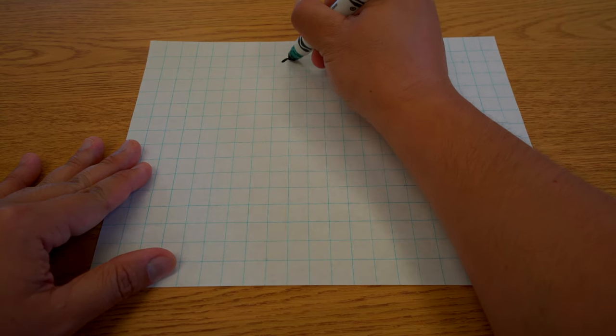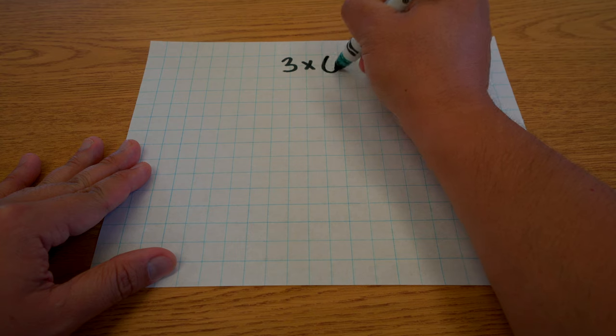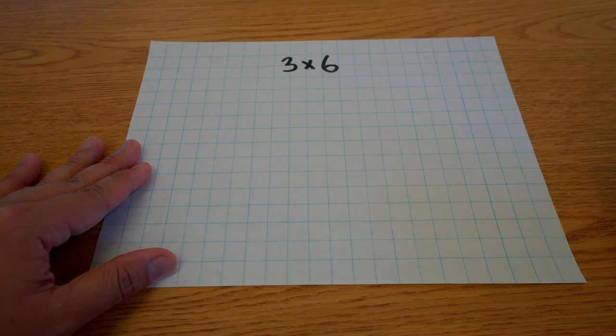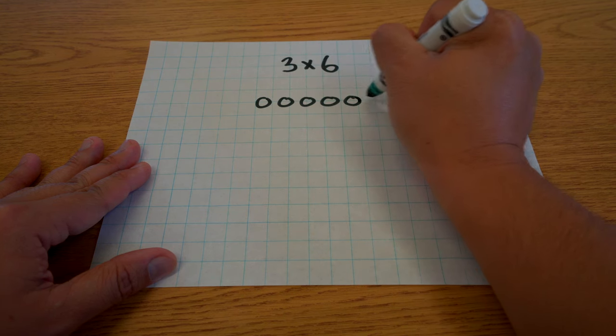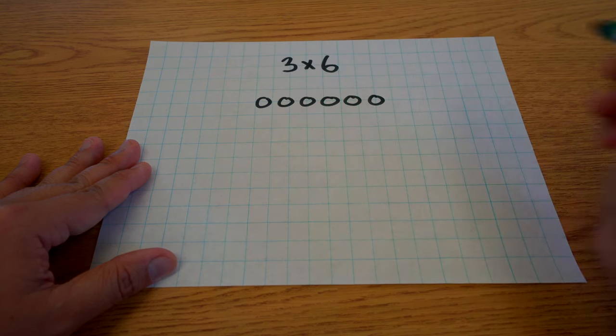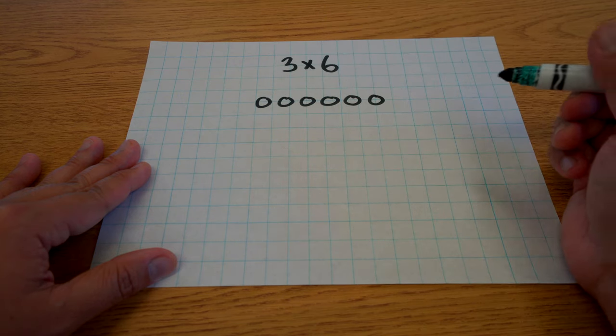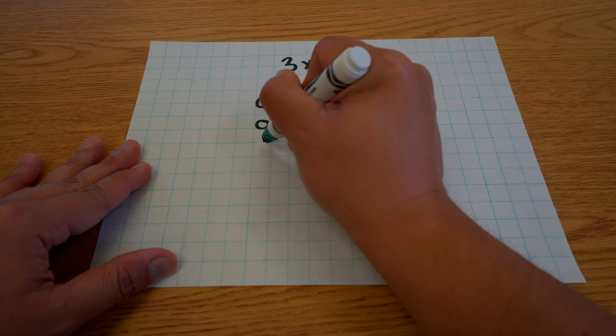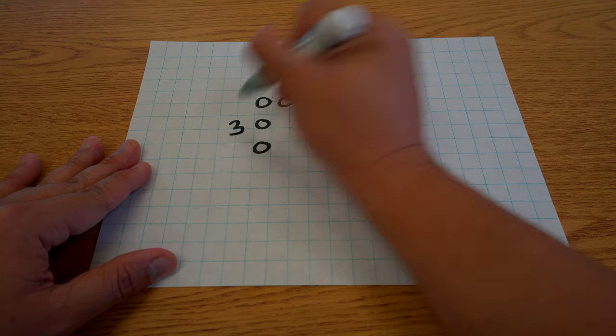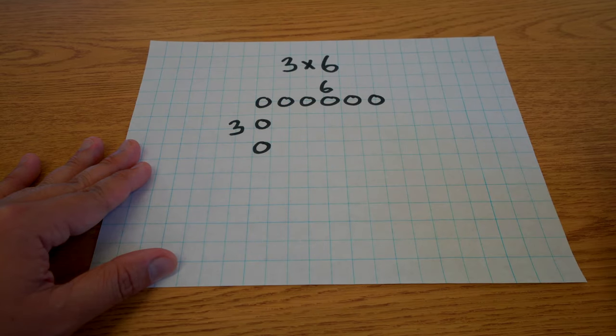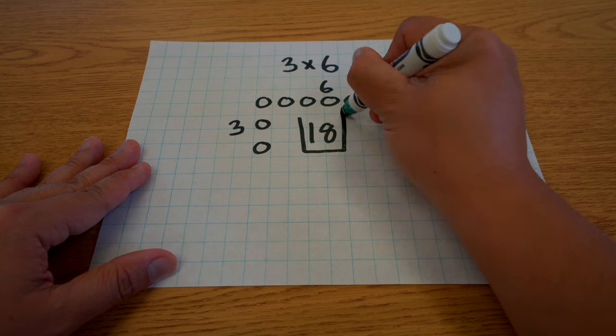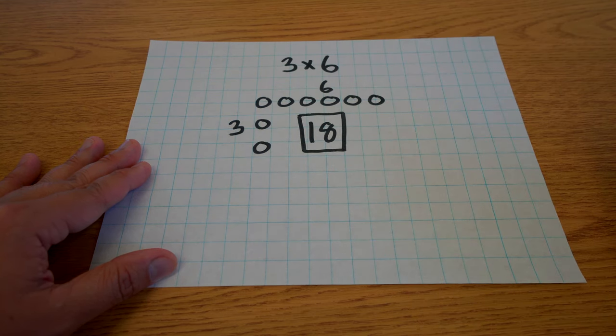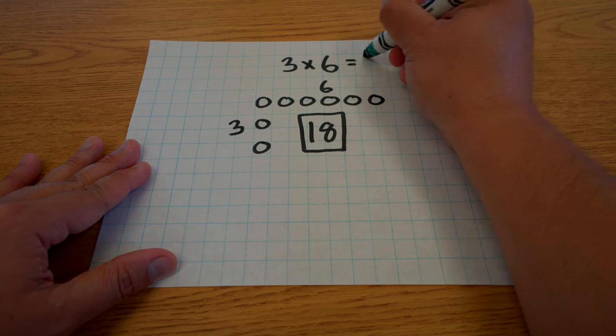Let's do three times six. So that's three rows of six. Okay, here's one row of six, but instead of drawing all of the rows, I'm just going to put one side. So it's three rows of six. Okay, and then on the inside, I'm going to put 18 in a box because there should be 18 circles there because three times six is 18.